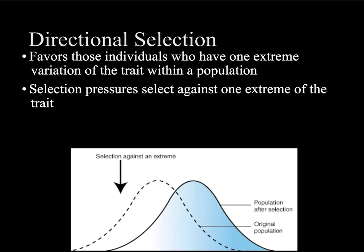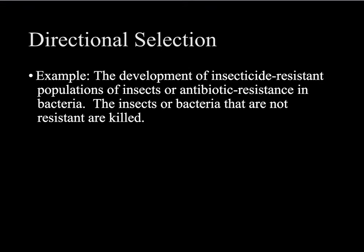A second type is directional selection, where one extreme is favored over the other or vice versa. A great example of directional selection is insecticide resistance and antibiotic resistance.